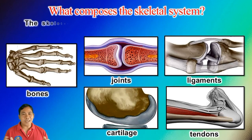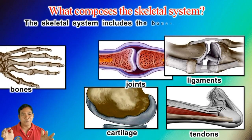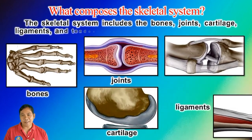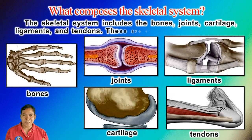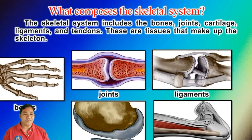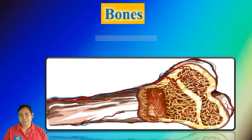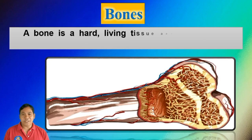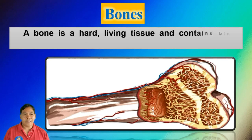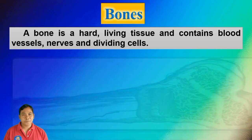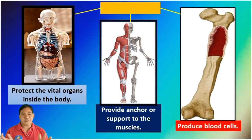The skeletal system includes the bones, joints, cartilage, ligaments, and tendons — these are the tissues that make up the skeleton. A bone is a hard living tissue and contains blood vessels, nerves, and dividing cells.